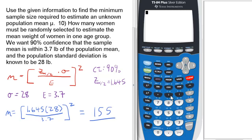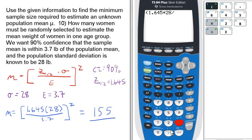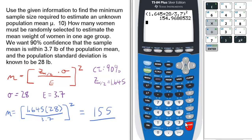So on the calculator that would be open parenthesis 1.645 times 28 divided by 3.7 close parenthesis, the whole thing squared, and enter.